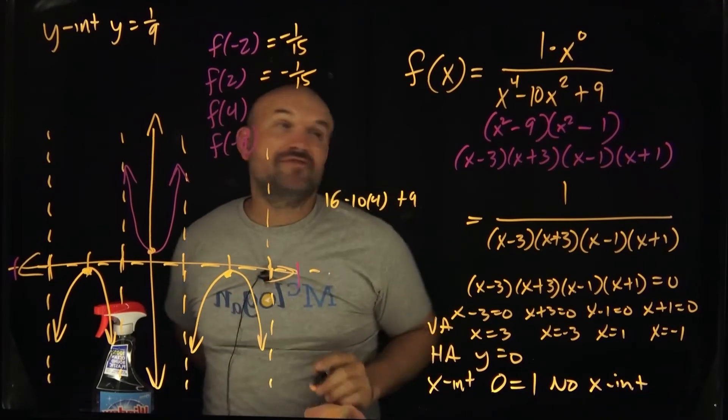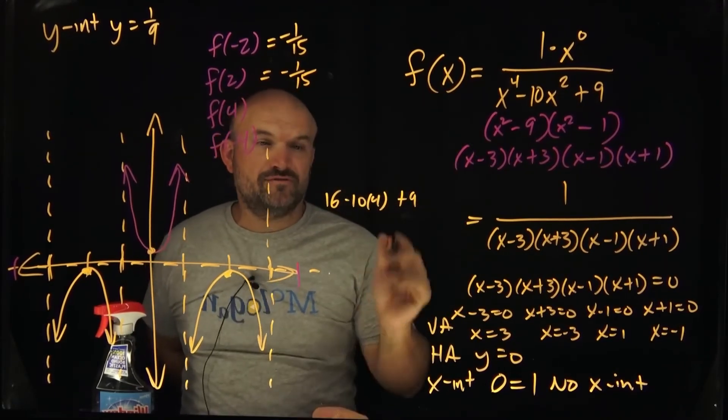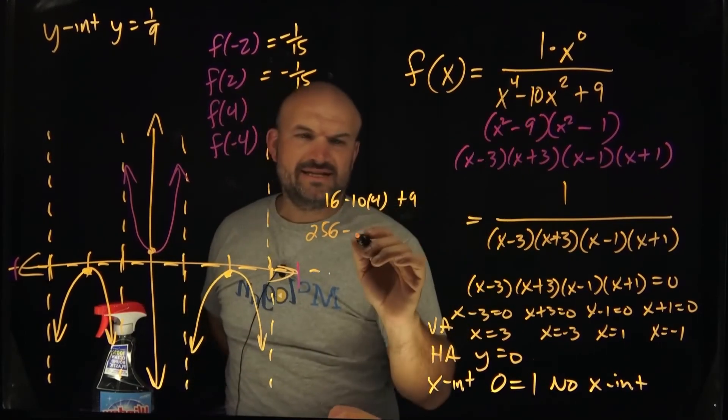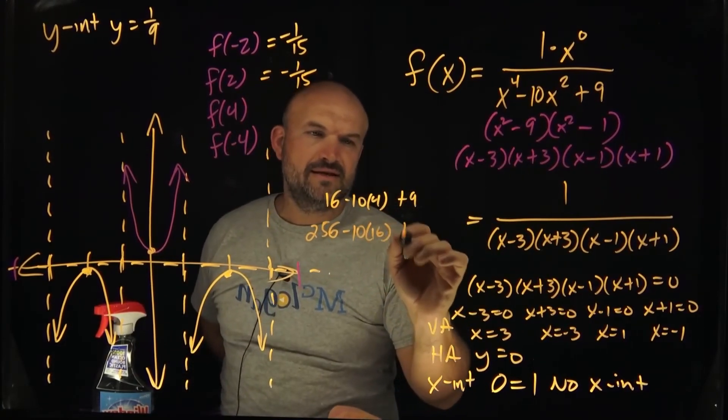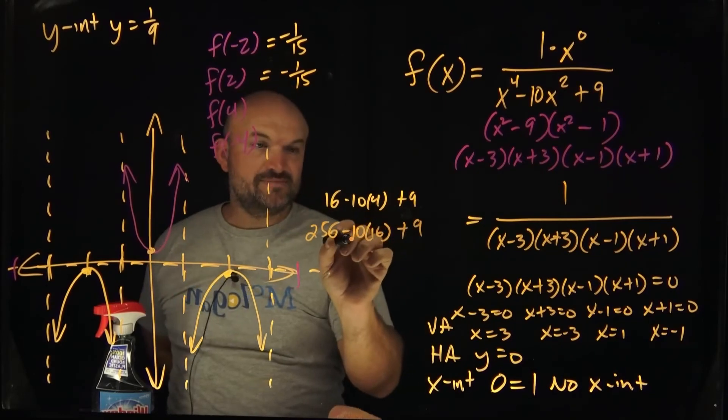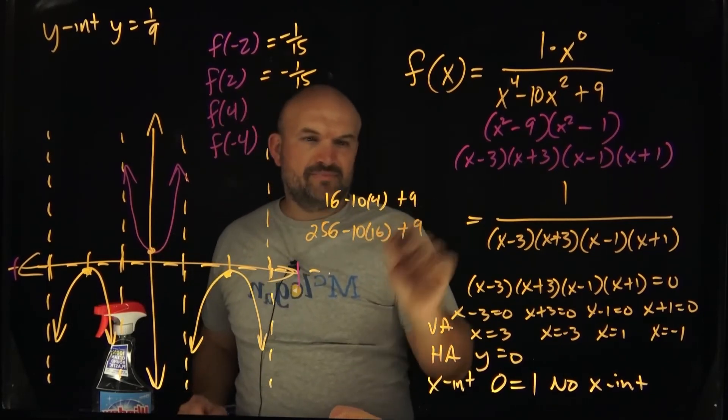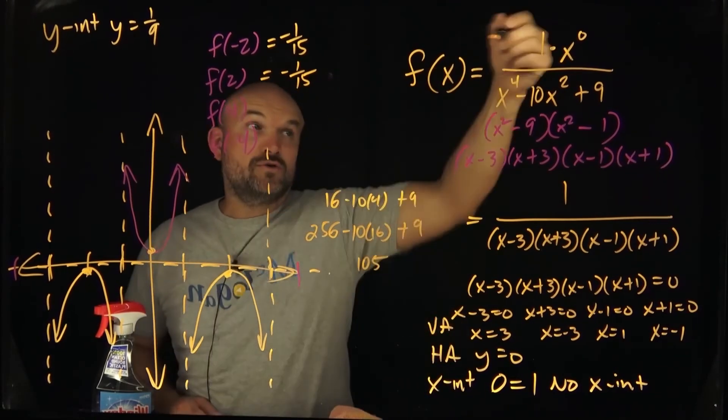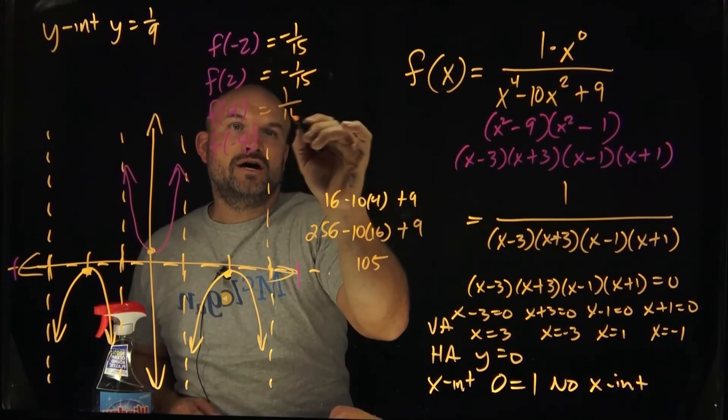All right, so now we need to do f of four. So we're going to plug it in. So four to the fourth power is going to be 256 minus four squared would be 16, so that'd be negative 10 times 16 plus 9. So therefore, that's going to be 160 and then plus 9, so that's going to give you 105. But remember guys, that's over one. So this is going to be one over 105.